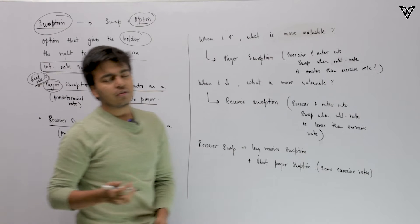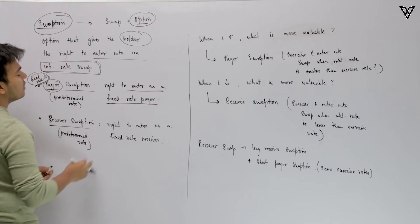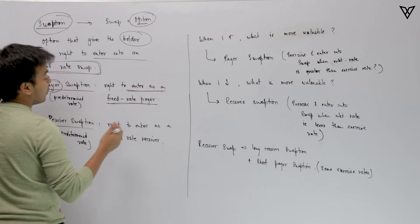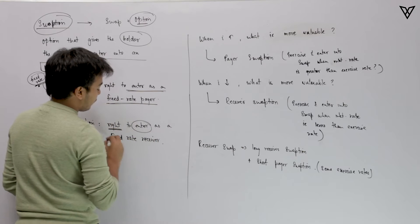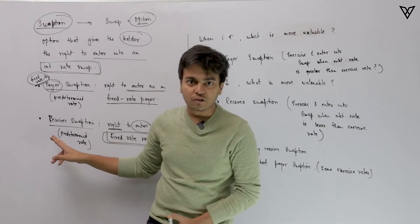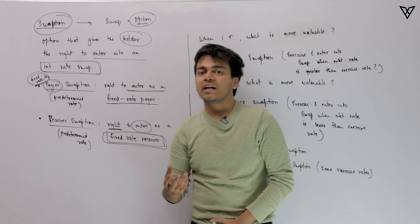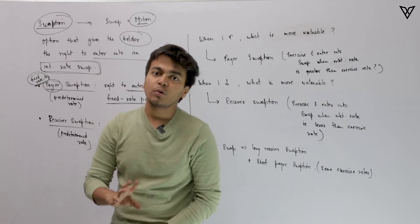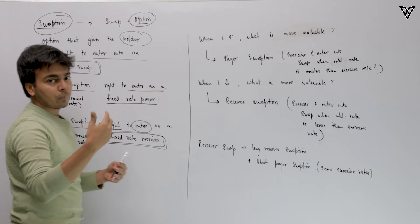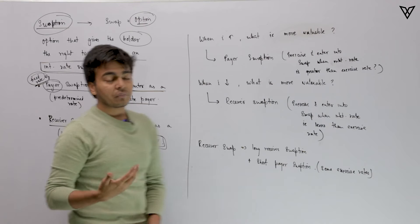At a predetermined rate, you get to enter into a swap as a fixed rate payer at a certain point in time. Likewise, we also have receiver swaption, where the person gets the right to enter as a fixed rate receiver. Whosoever has gone long receiver swaption will have the right to enter as a fixed rate receiver. So if you are going long payer swaption, you get the right to enter as the fixed rate payer, and if you are going long receiver swaption, you get the right to enter as a fixed rate receiver.